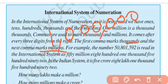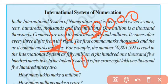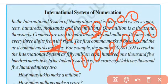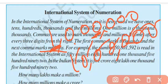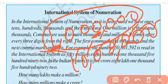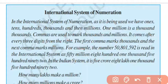In the Indian system, when writing the same number, we use the first three digits then a comma, then two digits then a comma, then two digits then a comma. So we count: one, ten, hundred, thousand, ten thousand, lakh, ten lakh — that is one million.